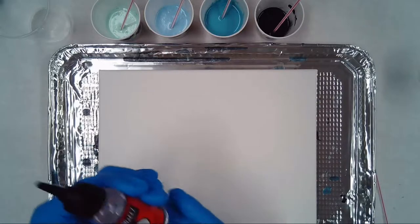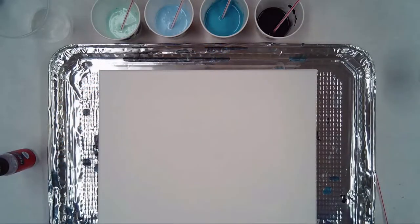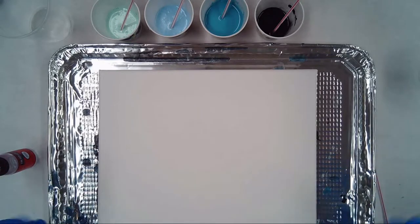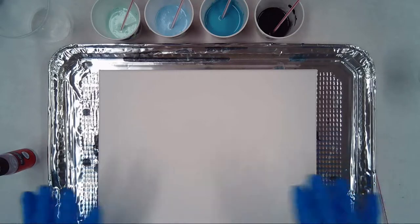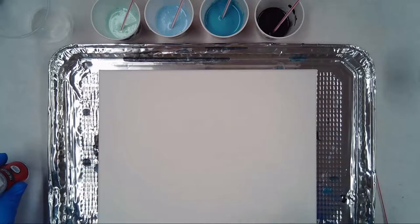One of the big differences that we're going to do this time is we're going to be adding silicone to our paint. And what that does is it creates cells, little kind of bubbles that will pop and create a really cool technique or a cool effect on the canvas.